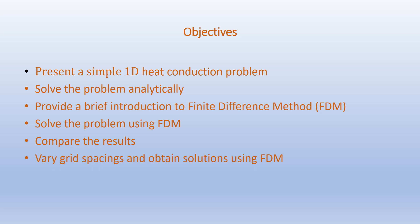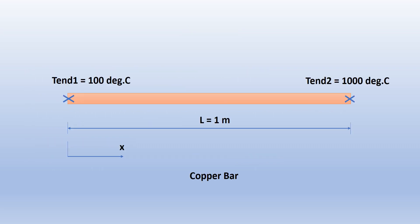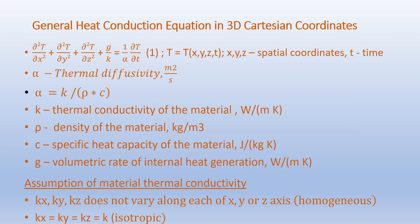We have a one-meter-long copper bar. One end of the bar is kept at 100 degrees Celsius and the other end of the bar is kept at 1000 degrees Celsius. Our objective is to find the temperatures at various locations along the length of the bar.